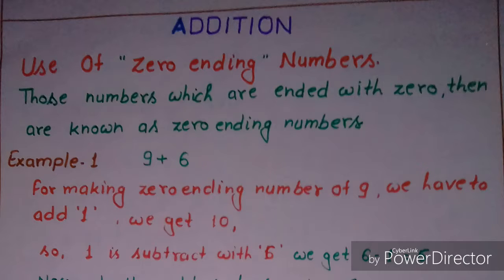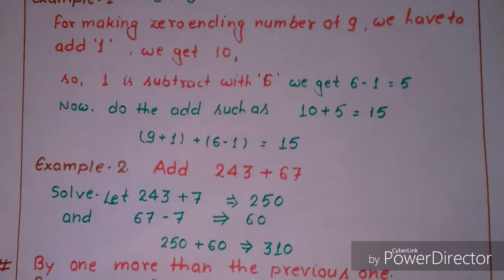Let us see example one: add 9 and 6. To make a zero-ending number of 9, we have to add 1, so 9 plus 1 equals 10. That 1 is subtracted from 6, so 6 minus 1 equals 5. Now we can add easily: 10 plus 5 equals 15.